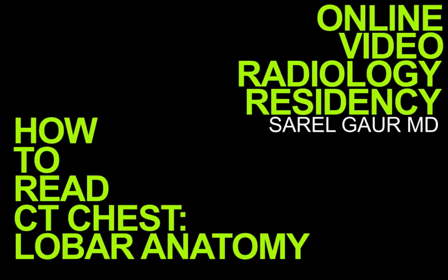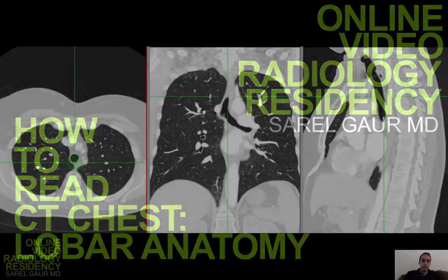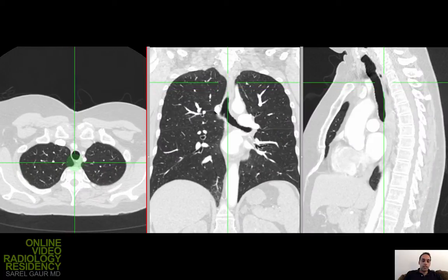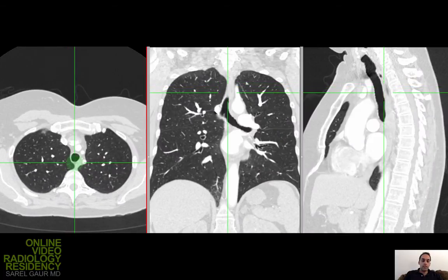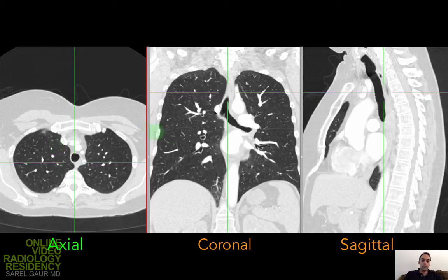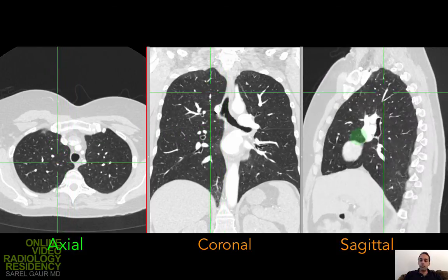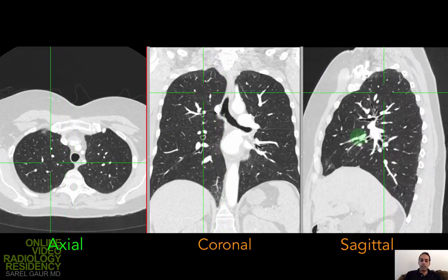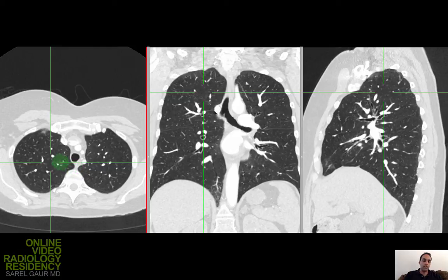Let's discuss lobar anatomy on CT. What I have in front of me is a chest CT in lung windows. I have axial images, coronal reformats, and sagittal reformats. These are about 1 millimeter in slice thickness. Let's go ahead and start discussing the different lobes of the lung.